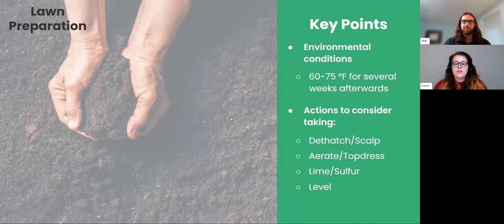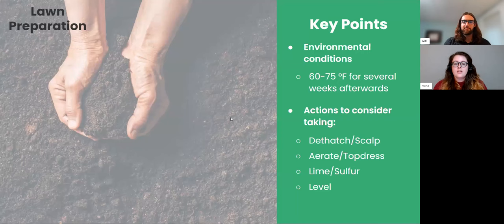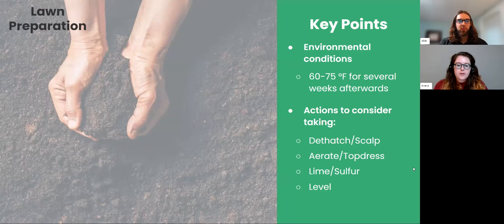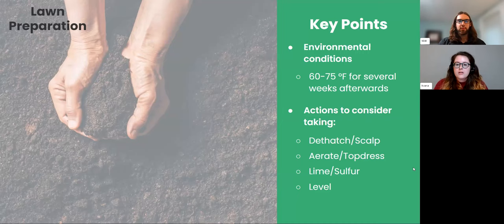We'll go over to Ivana to chat about lawn preparation. This is definitely the first step you want to take as your lawns are greening up — lawns in the south have been green for a little bit now. These are things you want to make sure are completed or in the works as your lawn starts to grow. Make sure temperatures are around 60 to 75 degrees for any of these practices, and take a comprehensive look at the health of your soil.